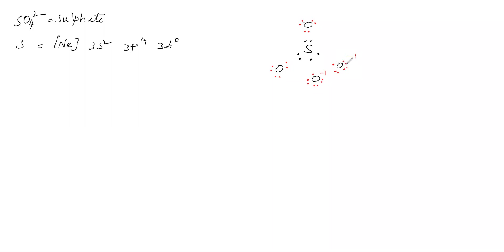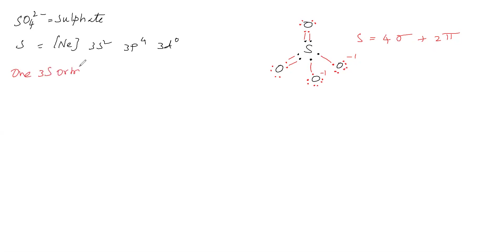Bonding gives two double bonds and two single bonds. Sulfur's valence shell has 4 sigma bonds and 2 pi bonds, with no lone pairs. For 4 sigma bonds, 4 hybrid orbitals are required. One 3s orbital and three 3p orbitals from sulfur undergo intermixing.